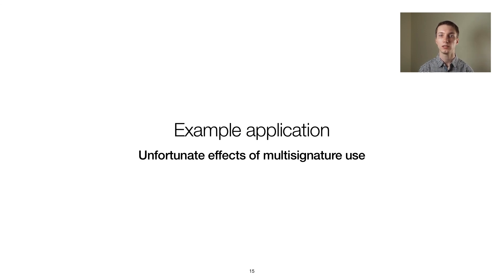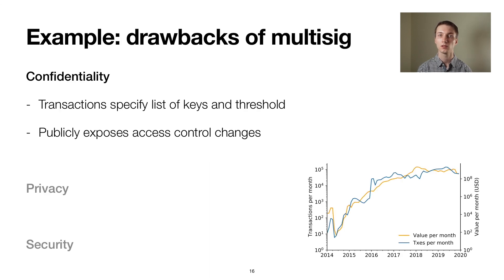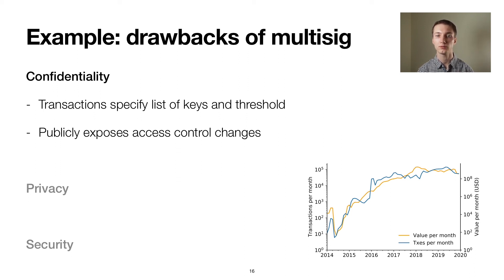In our paper, we showcase a number of applications for BlockSci that touch upon the security, privacy, and economics of cryptocurrencies. As an example, I briefly go through one of those applications, which are some unfortunate effects of using Bitcoin's multisignature functionality. Bitcoin's current multisig implementation requires the user to specify a list of keys, as well as a threshold of how many of those keys must provide a signature for a transaction to become valid. This provides better security than just a single key, but also exposes potentially sensitive information about changes in these access control structures. Those may, for example, correspond to a company's internal events, such as the loss of a device that stored a key or the departure of an important employee. We found that there are thousands of transactions every month that potentially exhibit such information leakage, for example through the transfer between multisig addresses with overlapping but not identical keysets.